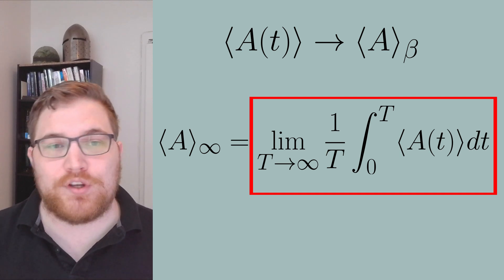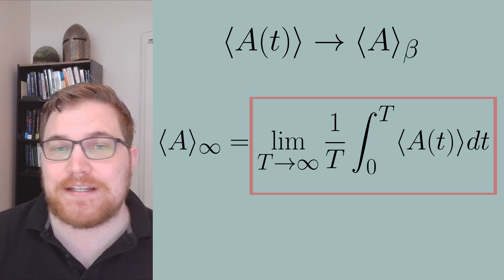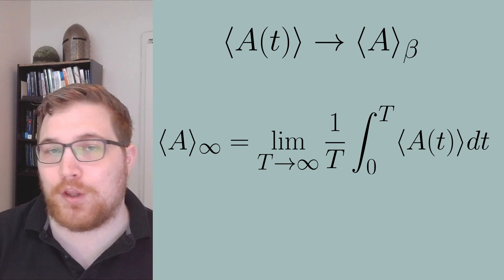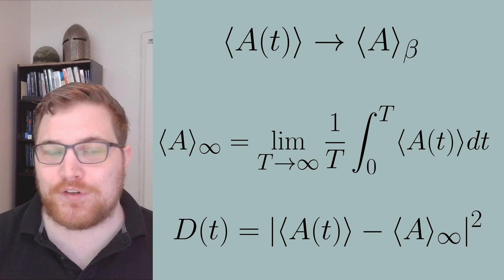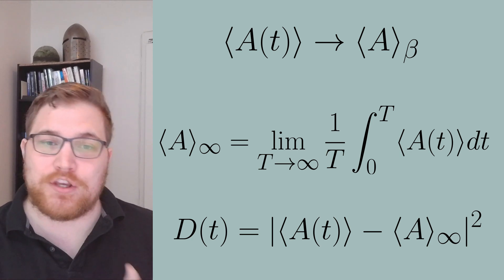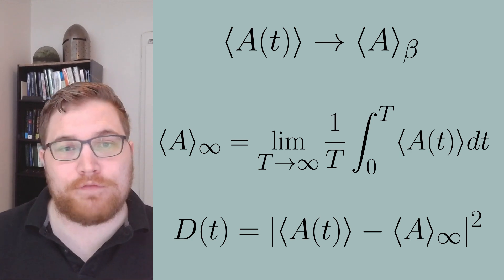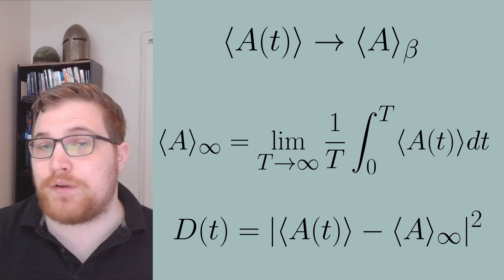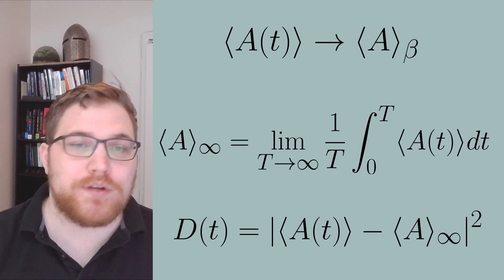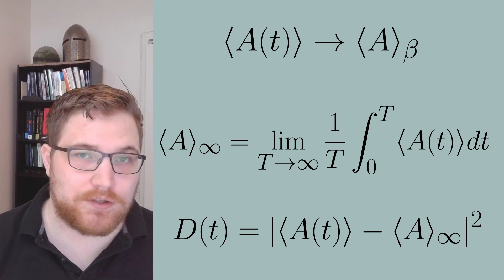With this definition, it will be useful to name the distance to equilibrium as the following function that we'll call d of t. And d of t will be defined as the difference between the expectation value and time, subtracting off the infinite time average, and we'll square this whole expression. So now that we have this language, let's jump into an example to gain intuition.